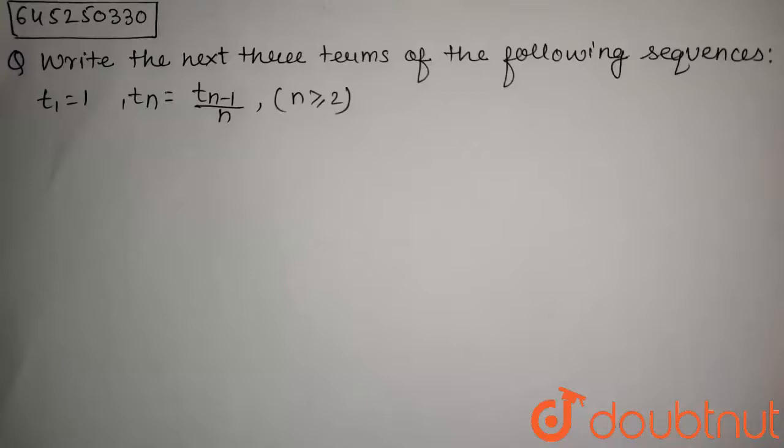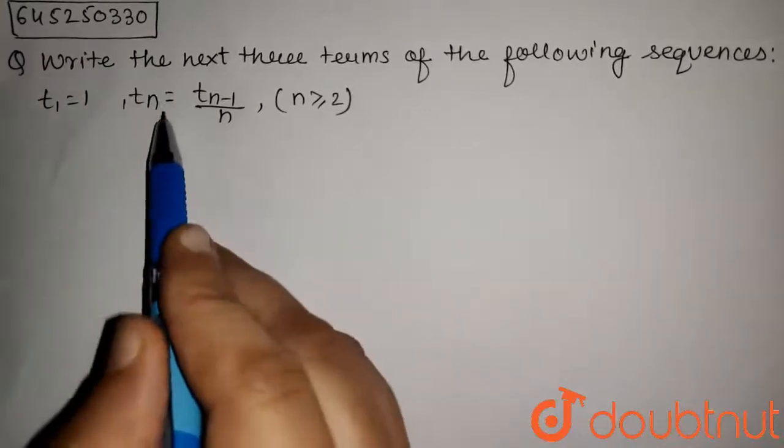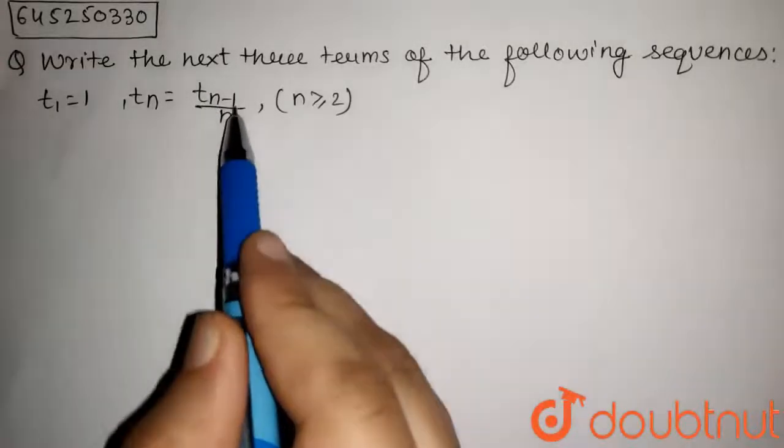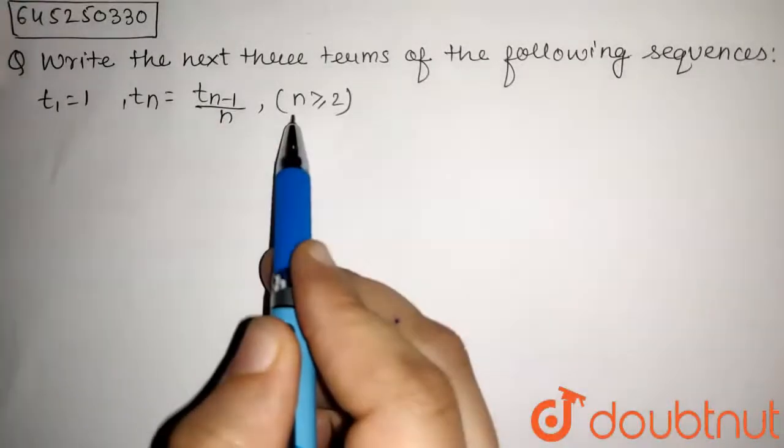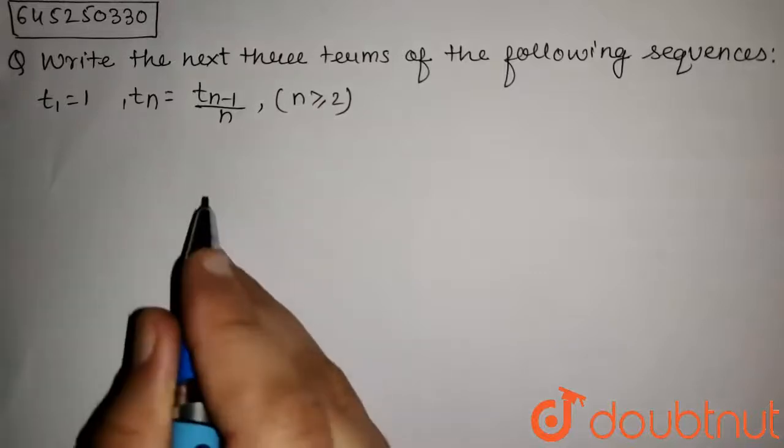The question is: write the next three terms of the following sequence. T1 equals 1 and Tn, that is the nth term, equals Tn minus 1 upon n, where n is greater than or equal to 2. Now we have to find the next three terms.